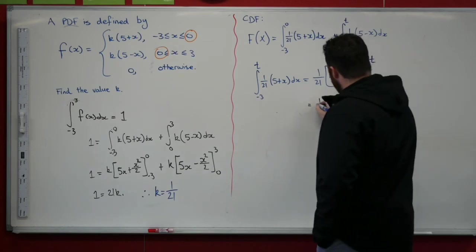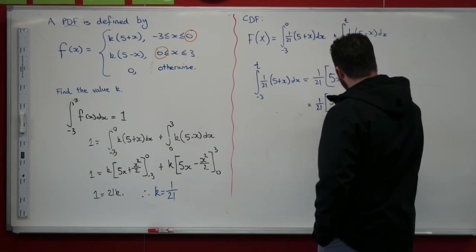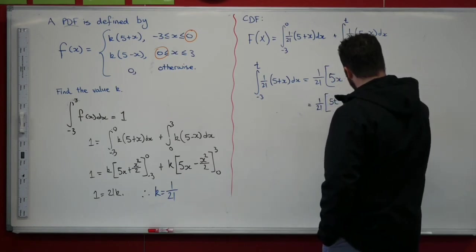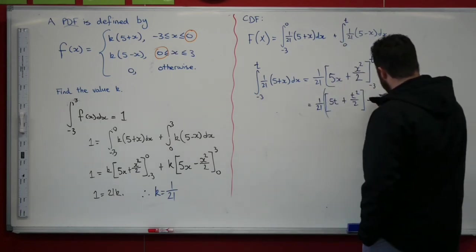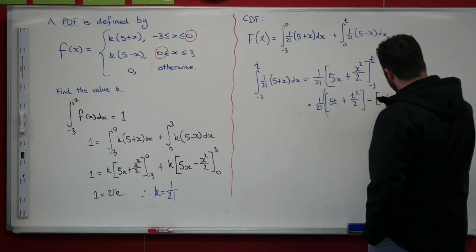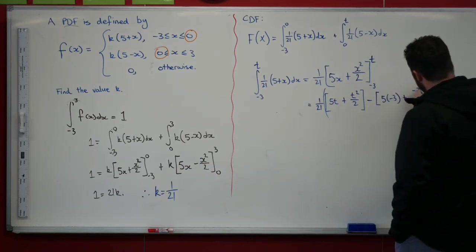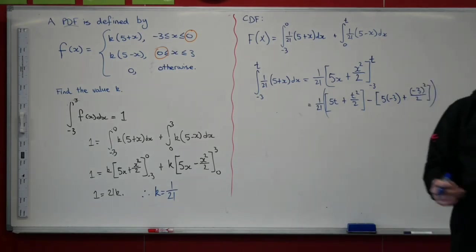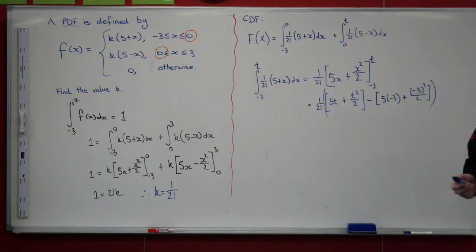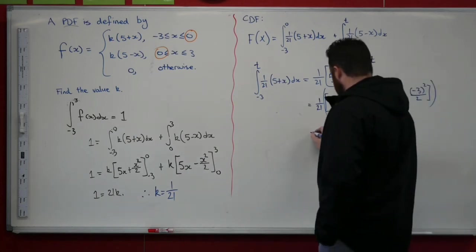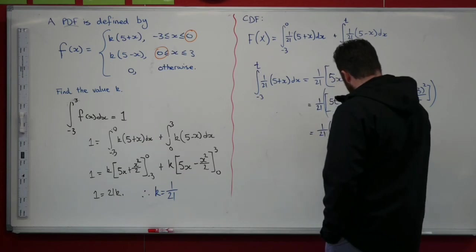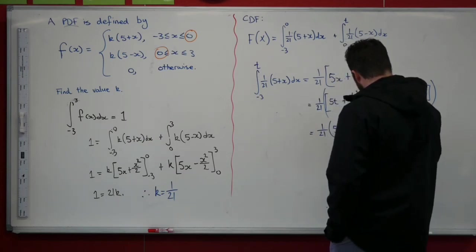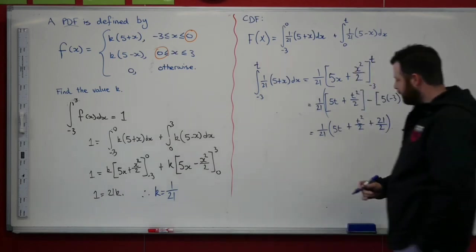So this just becomes 1/21(5t + t²/2) minus (5(-3) + (-3)²/2). Now, evaluating that one. When we go through and evaluate that one, what we are going to be left with is 1/21(5t + t²/2 + 21/2).